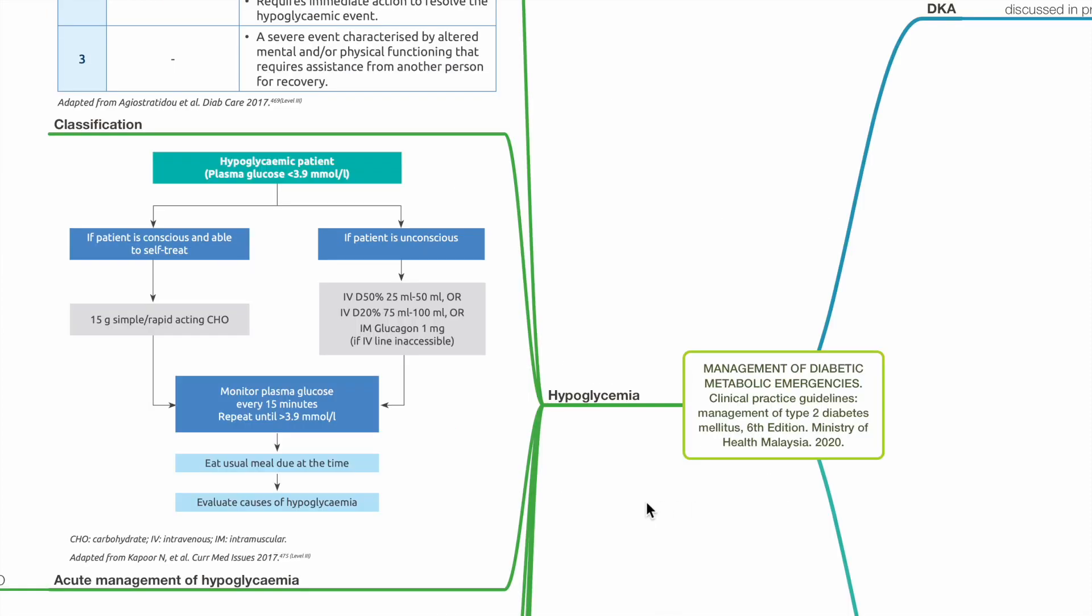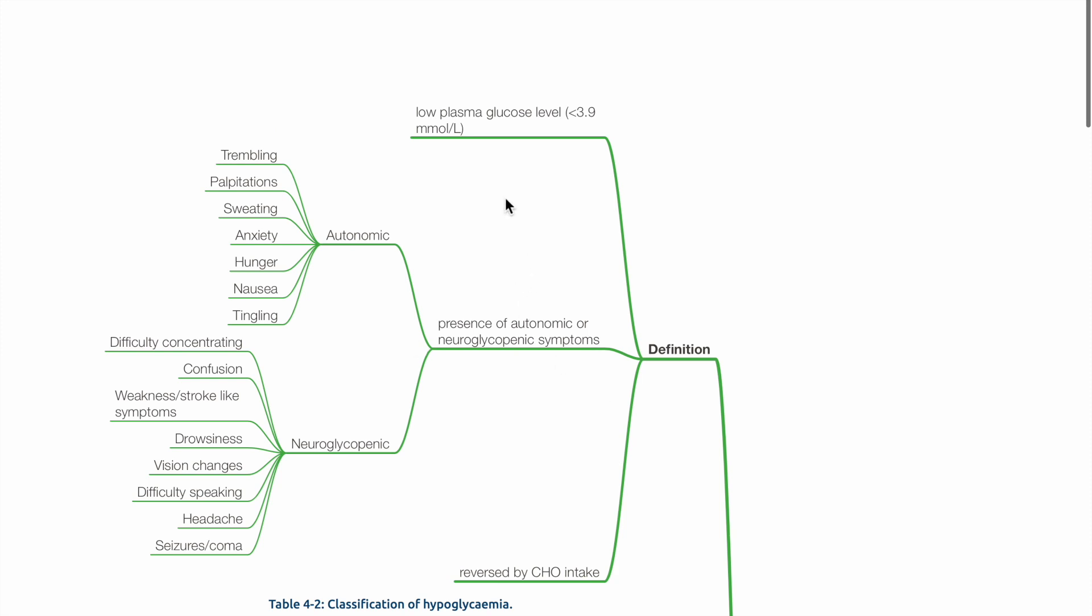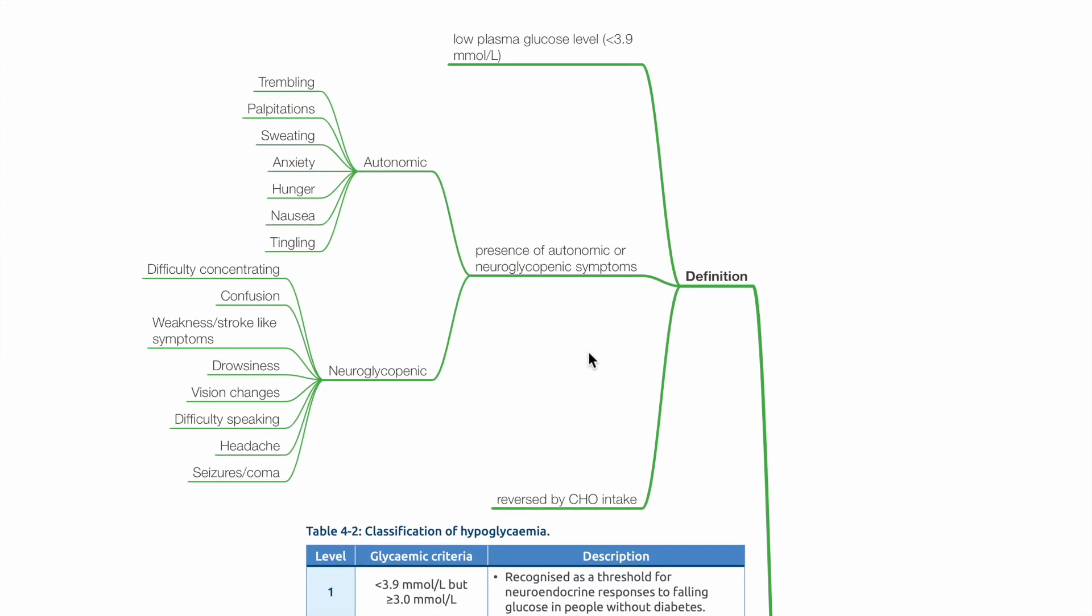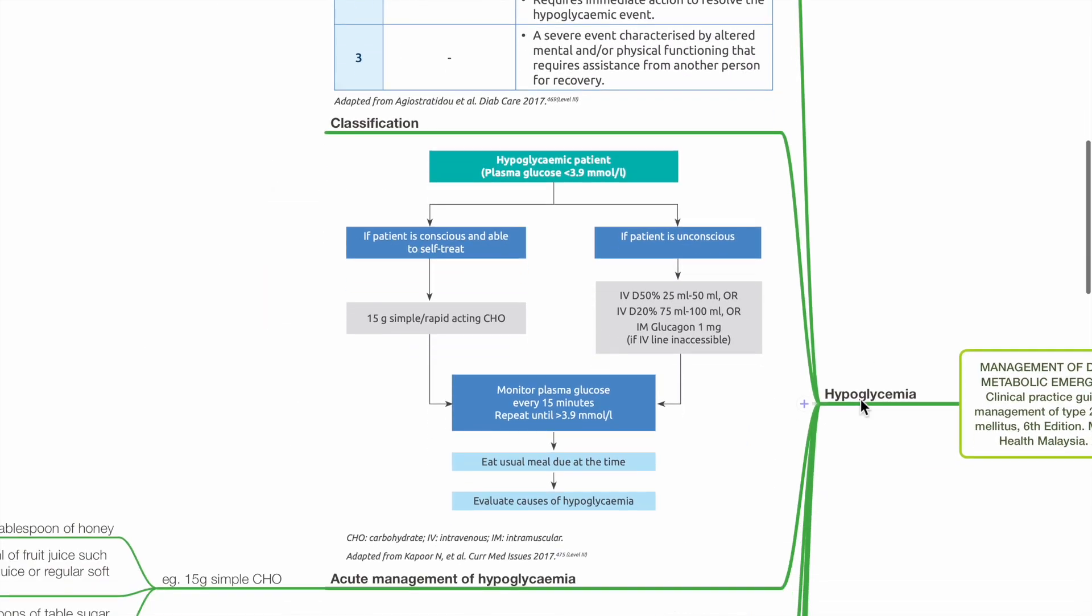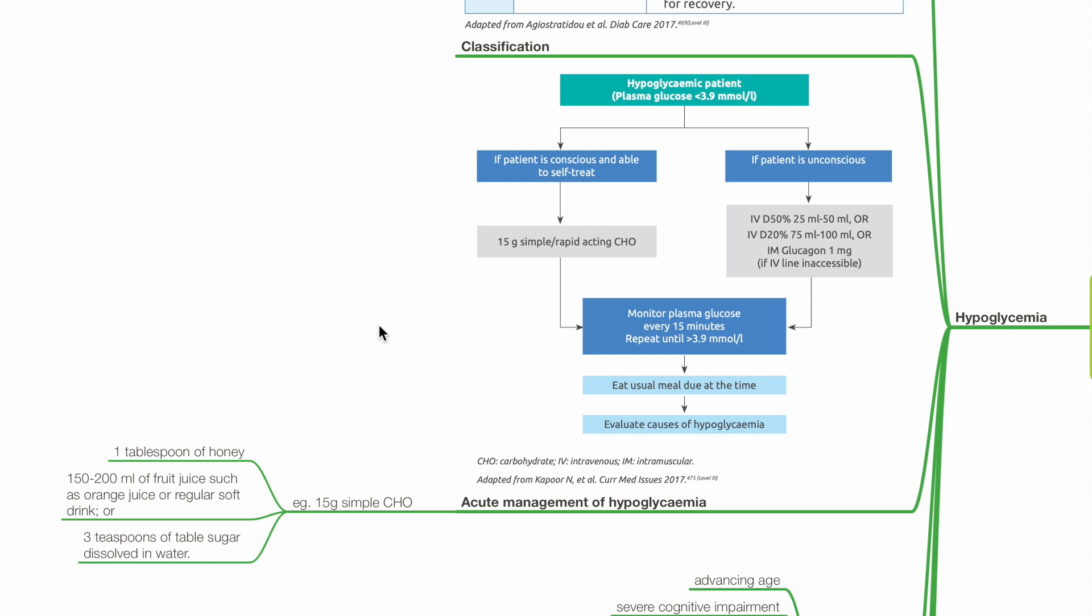Next is hypoglycemia. This is defined as low plasma glucose level, presence of autonomic or neuroglycopenic symptoms which are reversed by carbohydrate intake. Acute management of hypoglycemia: In a hypoglycemic patient with plasma glucose less than 3.9 mmol per liter, if patient is conscious and able to self-treat, provide 15 grams of simple or rapid-acting carbohydrate such as 1 tablespoon of honey, 150 to 200 ml of juice, or 3 teaspoons of table sugar dissolved in water. If patient is unconscious, give IV dextrose 50%, 25 to 50 ml, or IV dextrose 20%, 75 to 100 ml, or IM glucagon 1 mg if IV line is inaccessible.